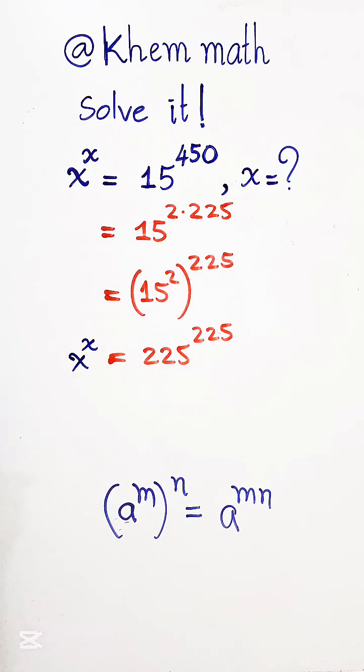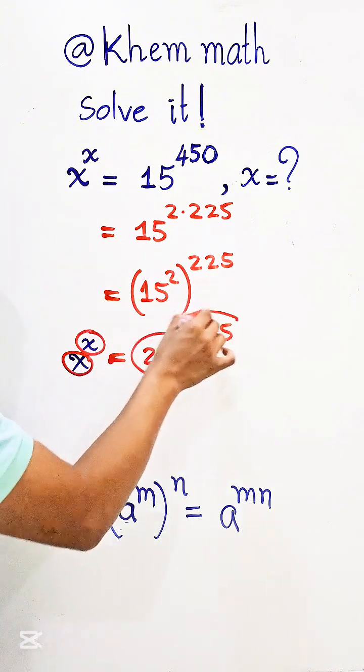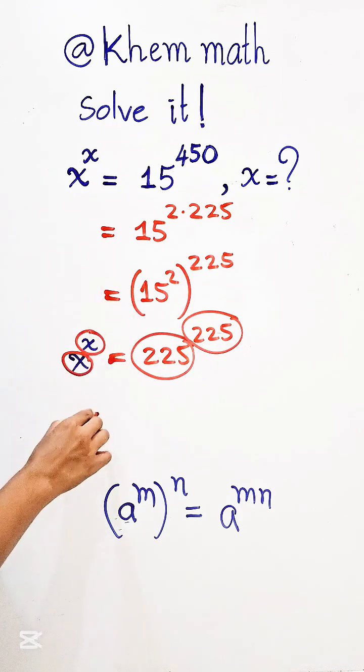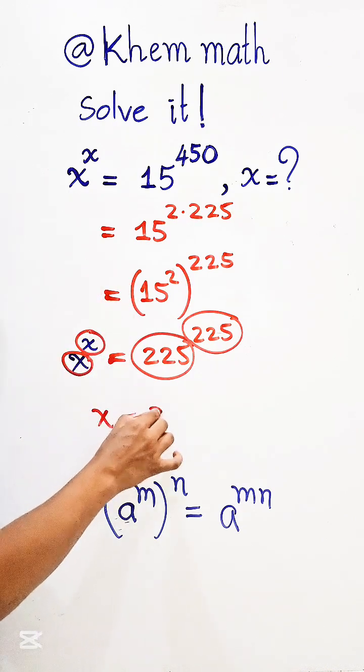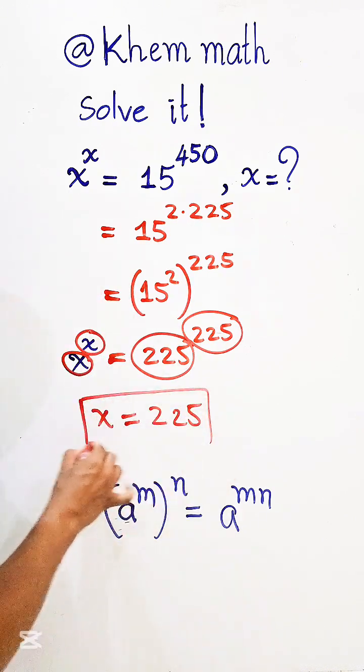So look, the basic x, exponent, is the basic 225. And the exponent also 225. So we get this x equals 225 is our answer.